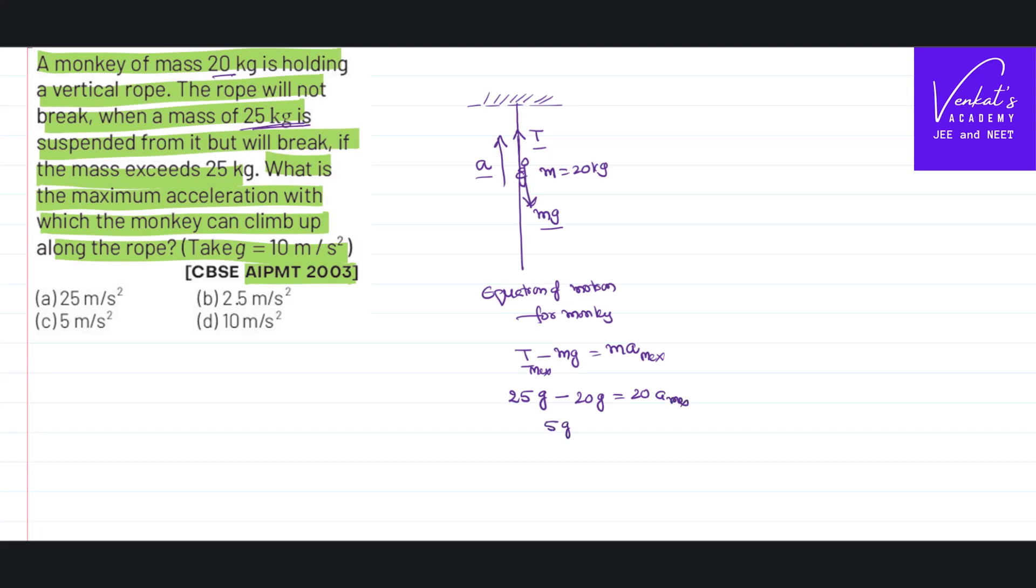So 5G equal to 20 into maximum acceleration upward. Therefore, A maximum equals 5G by 20. It is given that G is 10, that is 50 by 20, which is 5 by 2, that is 2.5 meters per second square.